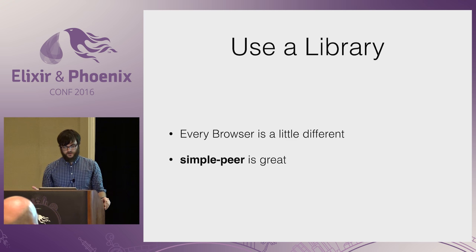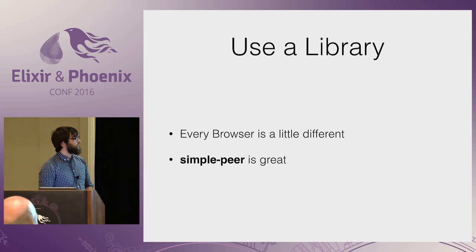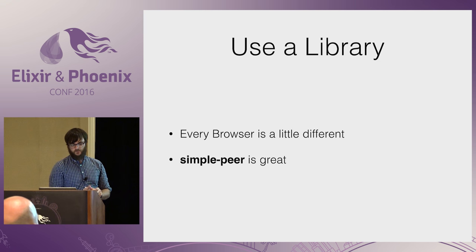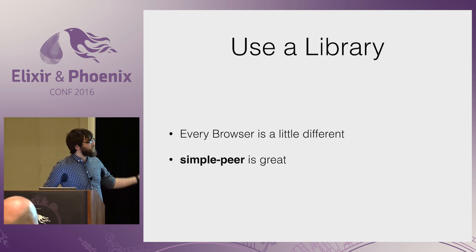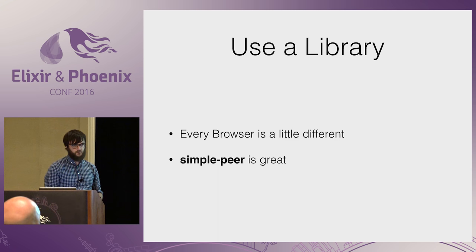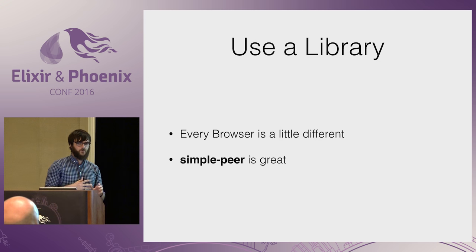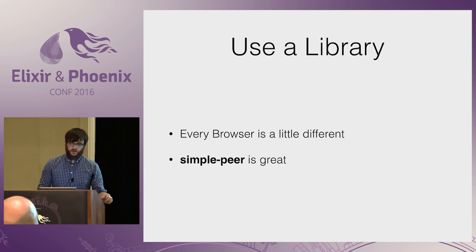In my demo I'm using a library called SimplePeer. Every browser right now has a slightly different API — it kind of sucks — and SimplePeer extracts the API into an easy-to-use system. I like to think of it as the jQuery.ajax of WebRTC right now. The same person who wrote WebTorrent.js and also a WebRTC-based CDN created SimplePeer, and it's really great, so you should use it.